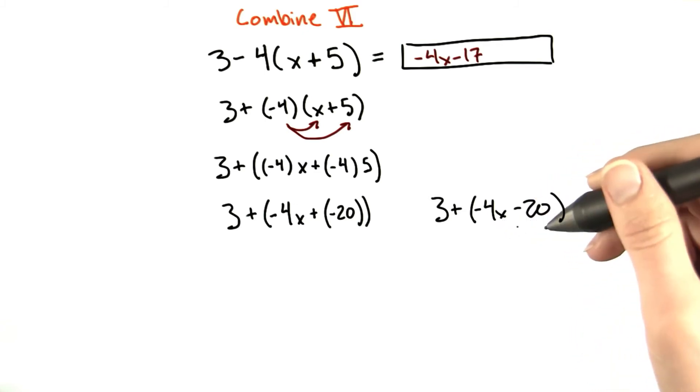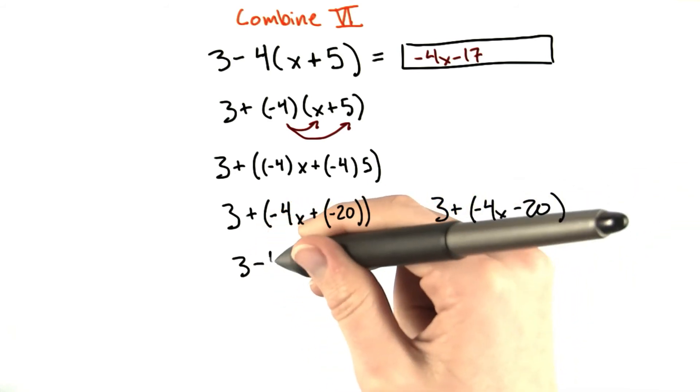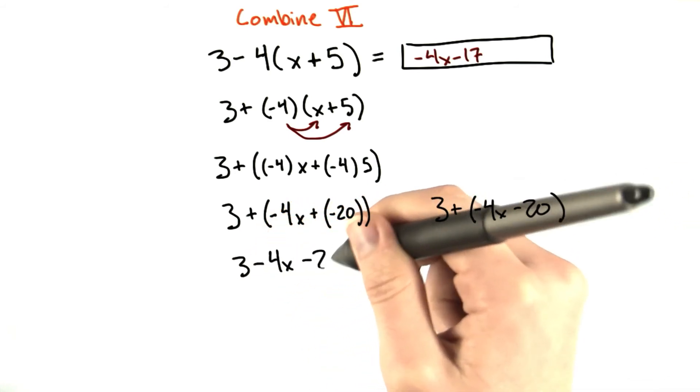We can't combine terms and there's nothing to distribute, so we can take away the parentheses to get 3 minus 4x minus 20.